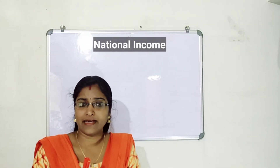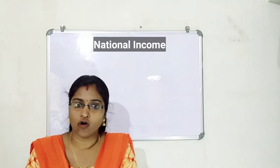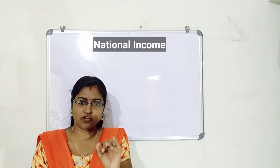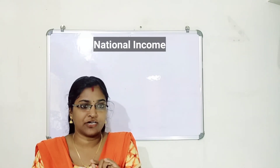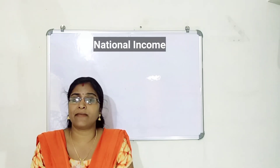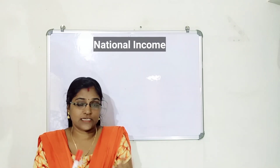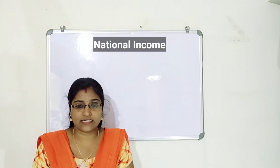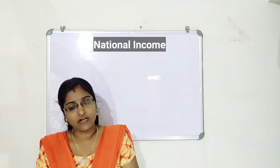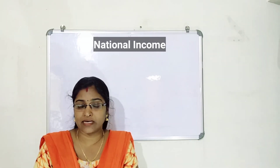The total income received by a country in one year is the national income of that country. It is the amount earned from the production of goods and services in a country during a year. This is received mainly from three sectors: the primary sector related with agriculture, the secondary sector related with industry, and the tertiary sector related with services.